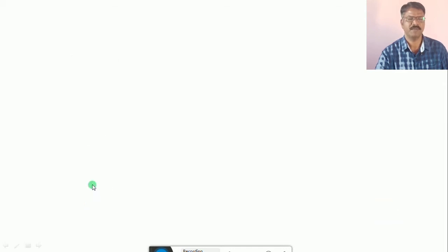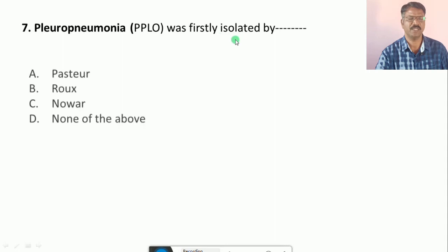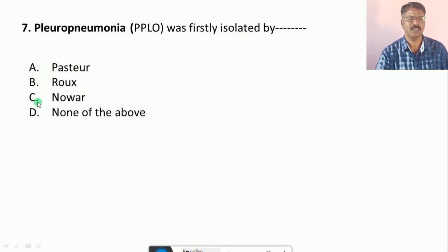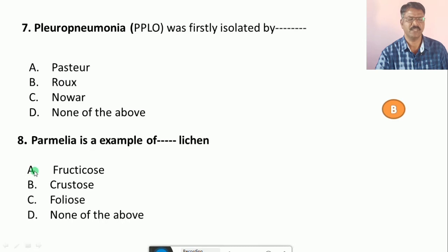Question number 7: Pleuropneumonia, that is PPLO, was firstly isolated by... Their options are A. Pasteur, B. Roux, C. Nocard, D. None of the above. The correct answer is B, that is by Roux. Question number 8: Parmelia is example of lichen. Their options are A. Fructose Lichen, B. Crustose Lichen, C. Foliose Lichen, D. None of the above. The correct answer is C, that is Foliose Lichen.